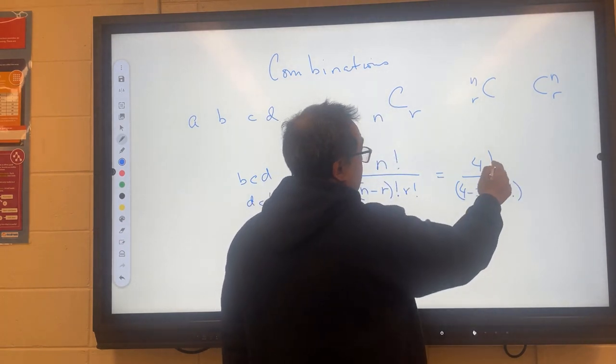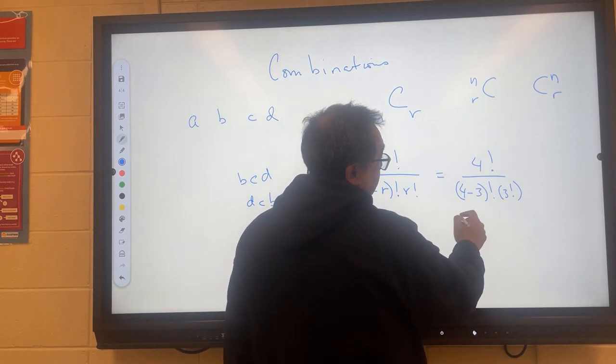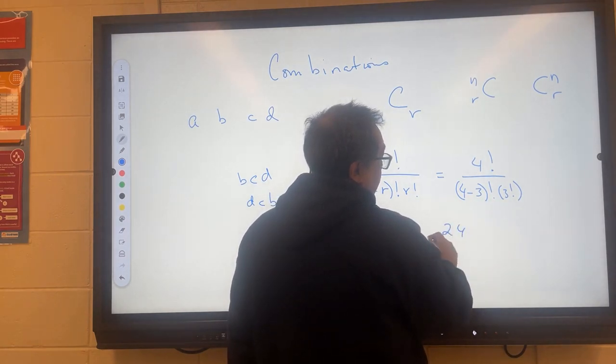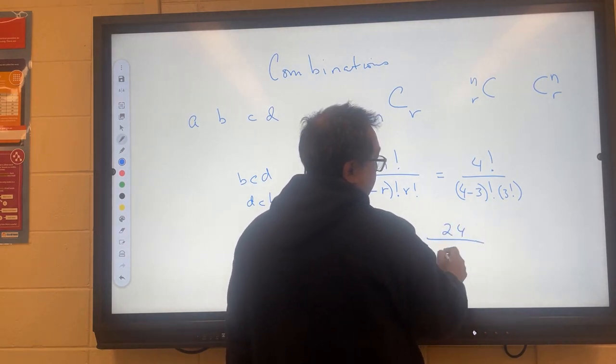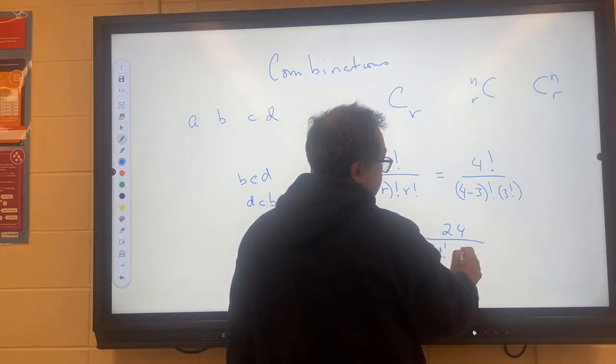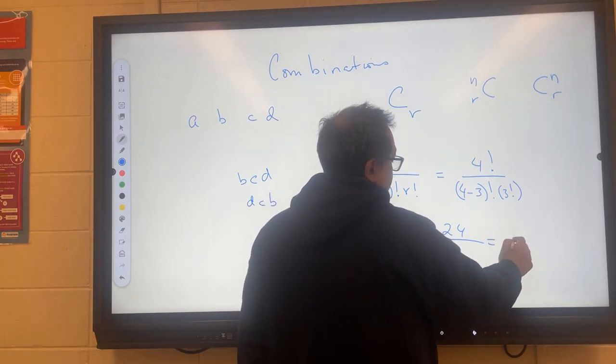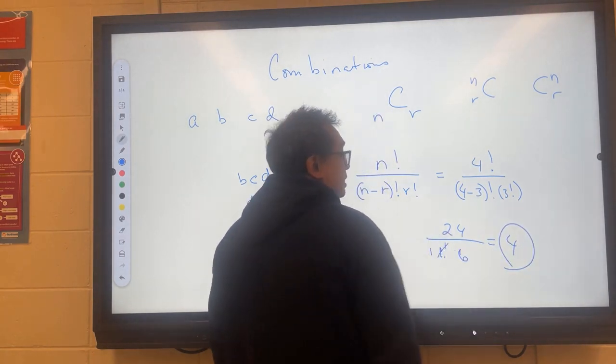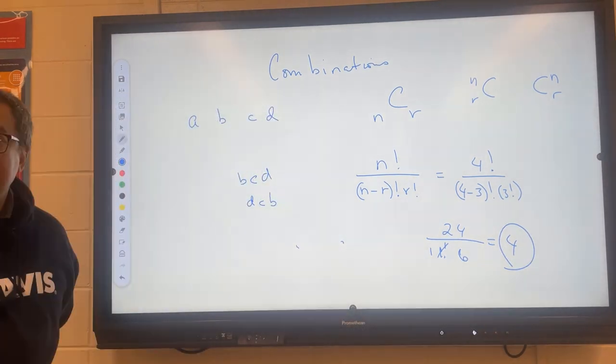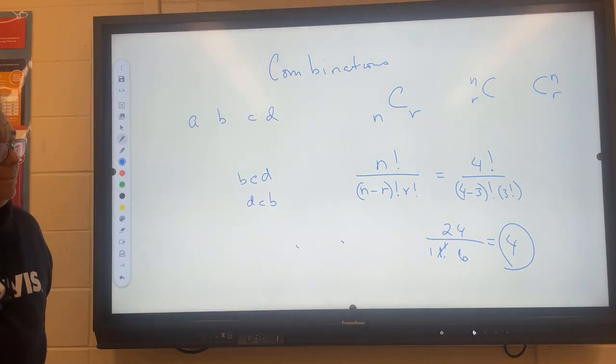And now the 4 on top, that would be a 4 factorial, that's 24. And then down here, 4 minus 3, that will be 1. And then over here, 3 factorial, that's 6. And so this part is just 1, and 24 divided by 6 is 4. So that's how many solutions there are. See the difference?